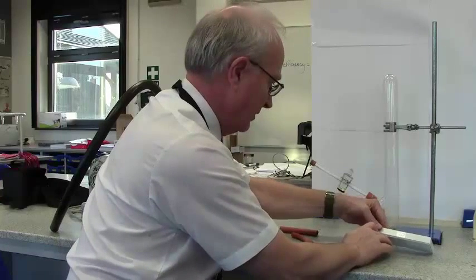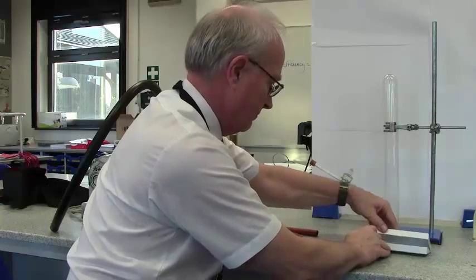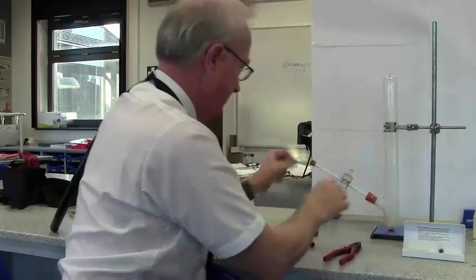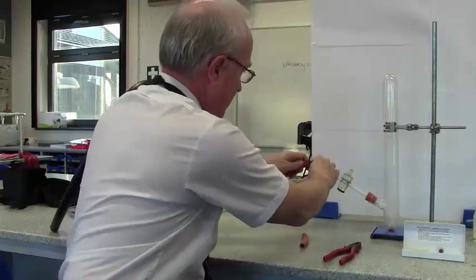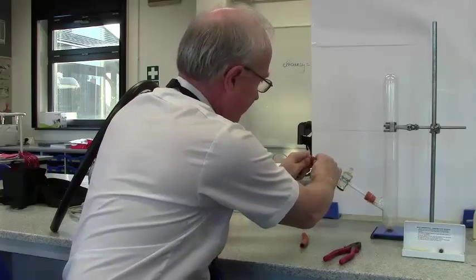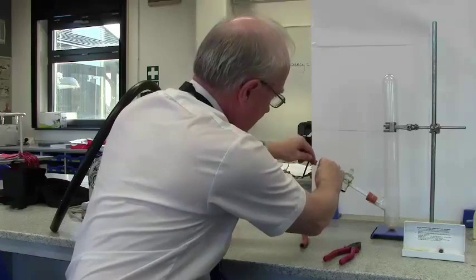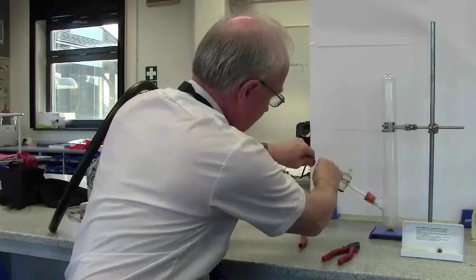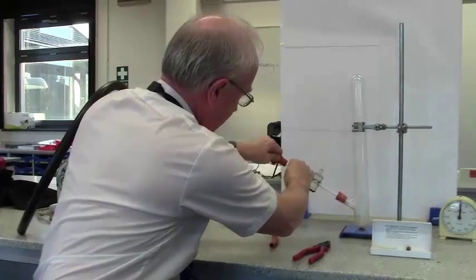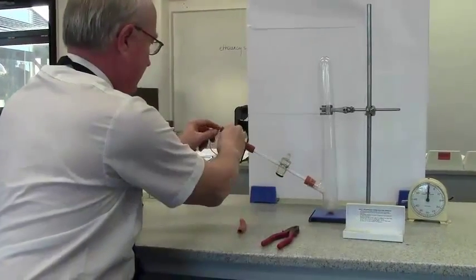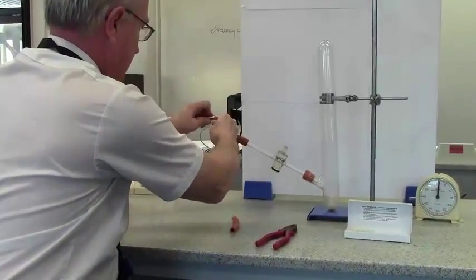I need to be able to connect it to this glass tubing, so I'm going to put the rubber tubing on here. Put the glass capsule in the end with the bromine in it.